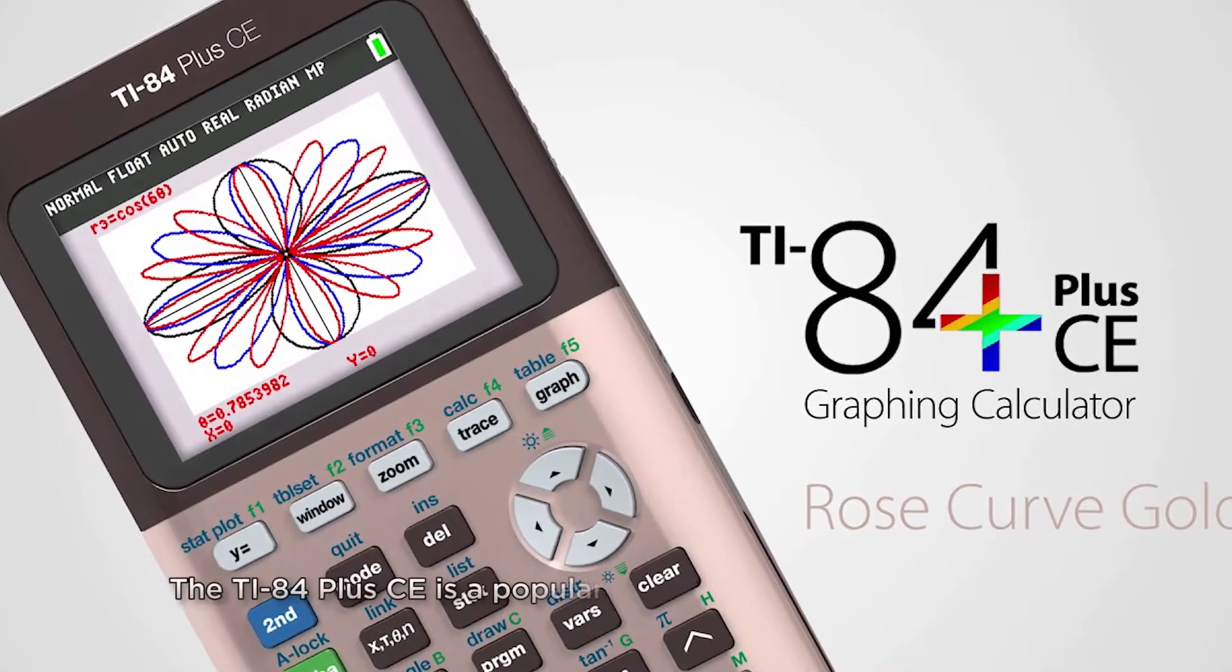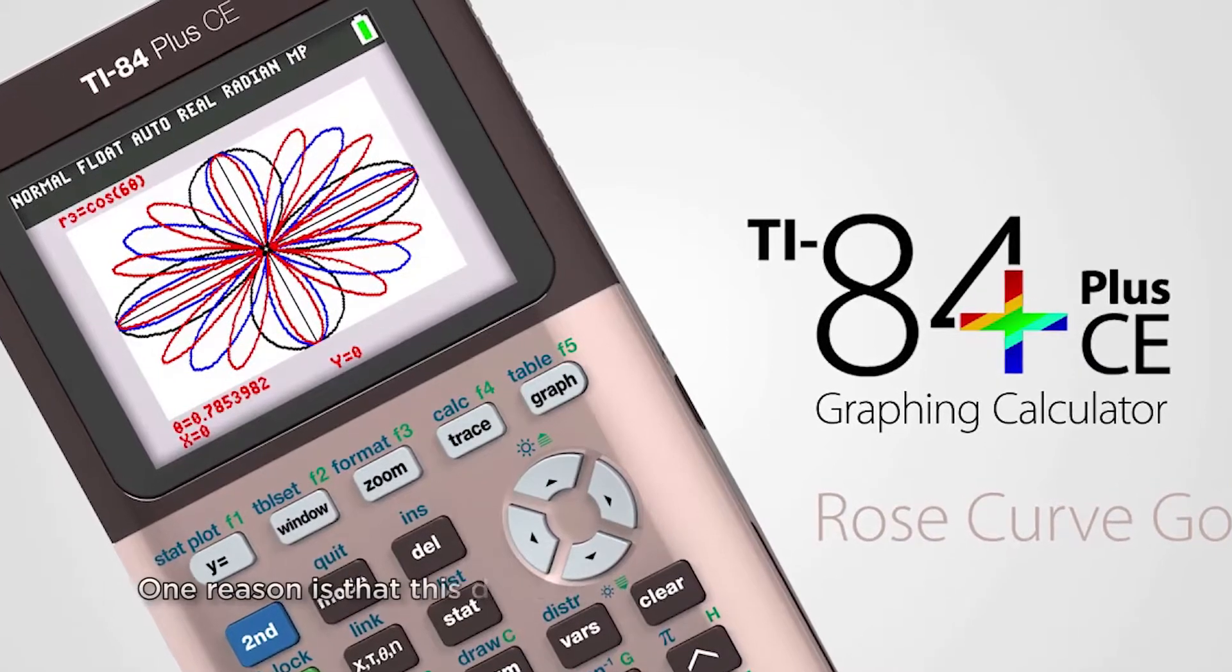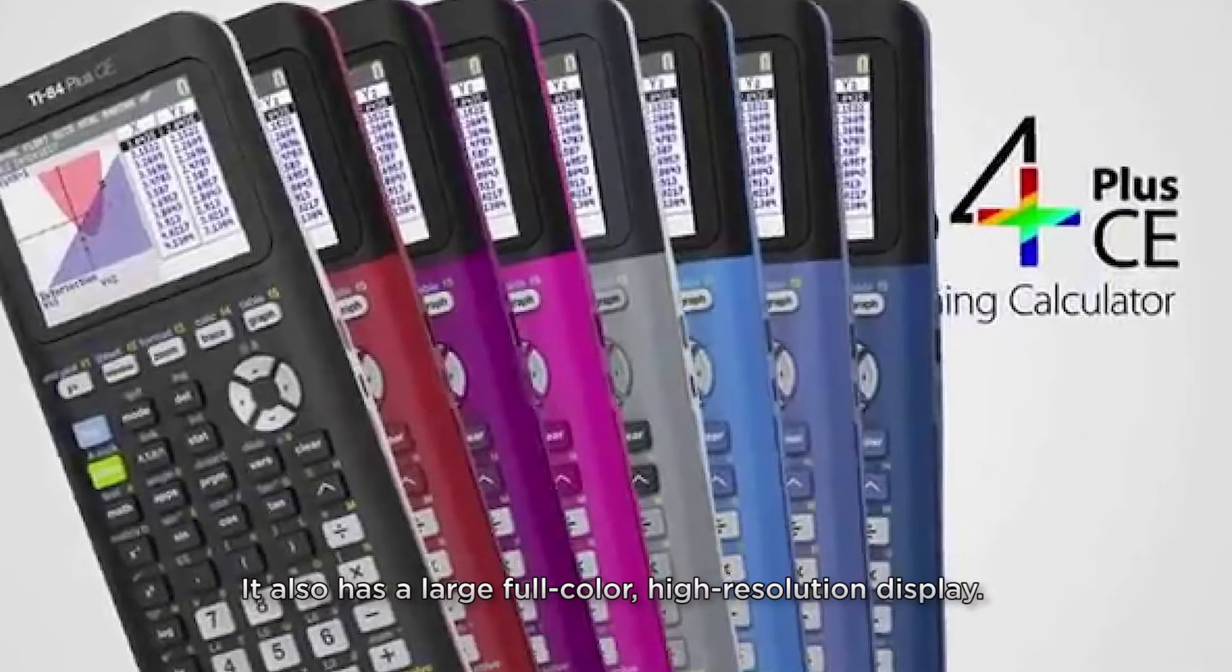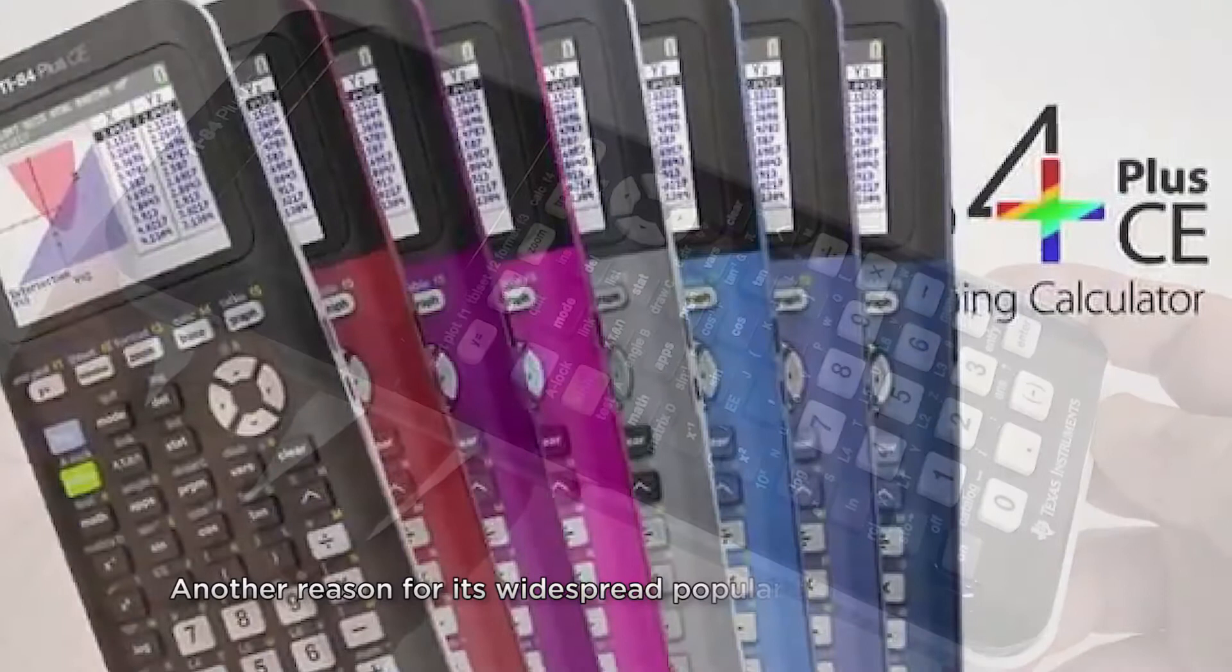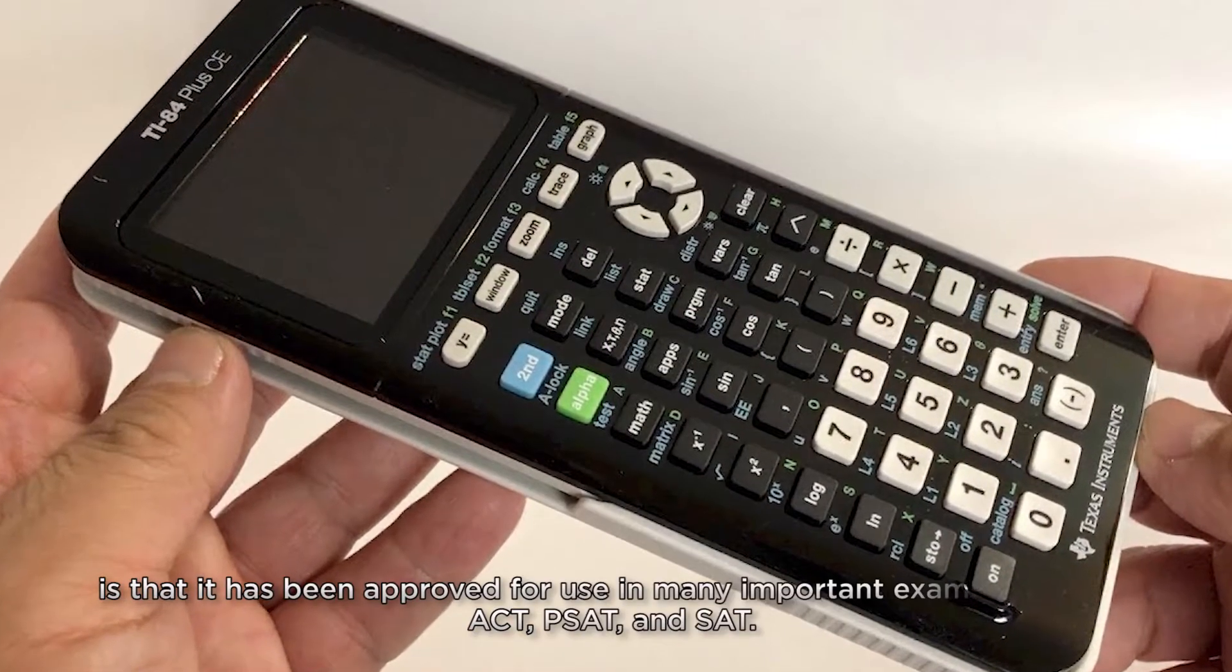The T84 Plus C is a popular choice among college students. One reason is that this device is full of pre-programmed functions. It also has a large full-color, high-resolution display. Another reason for its widespread popularity among students is that it has been approved for use in many important exams